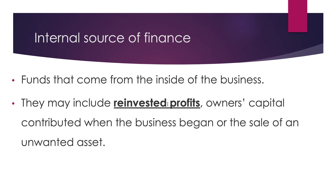Internal sources come from inside the business — directly within the business. They can include three main types: reinvested profits, owner's capital contributed when the business began, or the sale of an unwanted asset. For example, if a business has a property they're not currently using and they wish they had the money to expand or buy new machinery to improve efficiency, they might sell that property to do so.